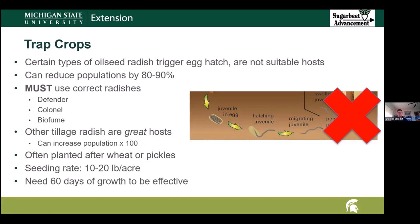However, it's really important to note that you must use the correct type of radish. Those would include either Defender, Kernel, or Biofume. If you use any radishes besides those specific oilseed radishes — so any other tillage radishes — they can actually be great hosts for sugar beet cyst nematode. With those tillage radishes, you can actually increase your population a hundredfold. So you really want to be careful and use the correct variety. The best time to plant your trap crop radish is either after a wheat crop or after pickles. If you plant after wheat, it's important to add a little bit of extra nitrogen. The target seeding rate for your trap crop radish is between 10 to 20 pounds per acre, and your radish needs about 60 days of growth to be effective as a trap crop.